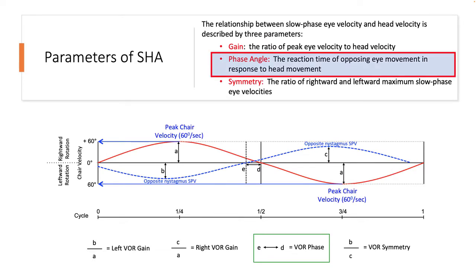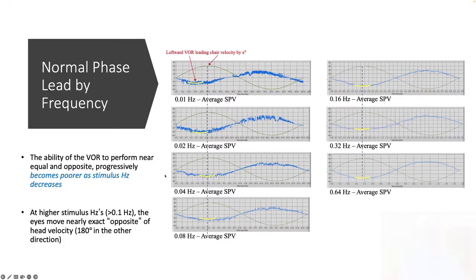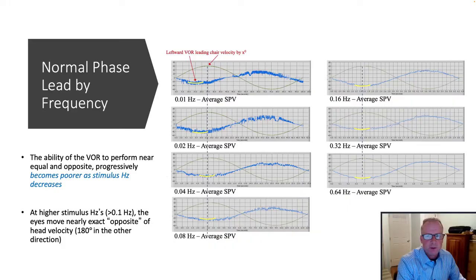Lastly, let's talk about phase angle. Phase angle is a more complicated measure. It refers to the timing response between the peak VOR eye response in relation to the peak head or chair response. This temporal relationship is used to describe the overall phase of the vestibular system.